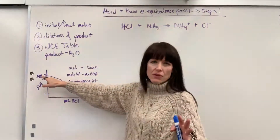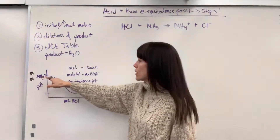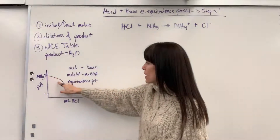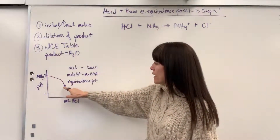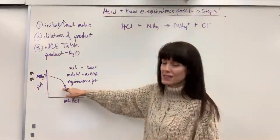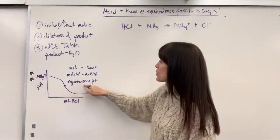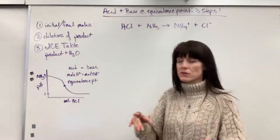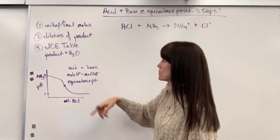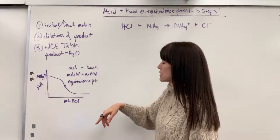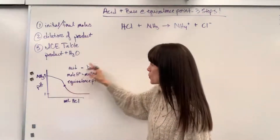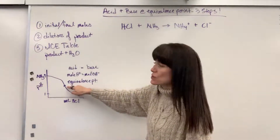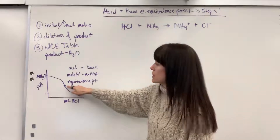You start at about a pH of 9 for our ammonia. Start adding drop, drop, drop, drop of the HCl and then right there, that point is called the equivalence point. It's where the moles of the acid equals the moles of the base. The moles of the hydrogen equals the moles of the hydroxide. When those moles are equal, that's the super special equivalence point.